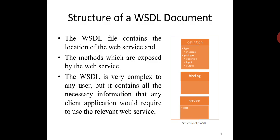Structure of WSDL document: A WSDL document is used to describe a web service. This description is required so that client applications are able to understand what the web service actually does. The WSDL file contains the location of the web service and the methods which are exposed by the web service. The WSDL file itself can look very complex to any user, but it contains all the necessary information that any client application would require to use the relevant web service.